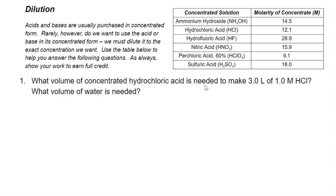The table in the top right gives the concentrated molarities for certain substances. These are usually found on the bottle of the substance. The questions on this worksheet ask you how much of that concentrated substance you need and how much water you need to prepare a specific amount of solution at a certain concentration. There's a convenient equation called the dilution equation: M1 times V1 equals M2 times V2, where M1 and V1 are the original molarity and volume, and M2 and V2 are the final molarity and volume.